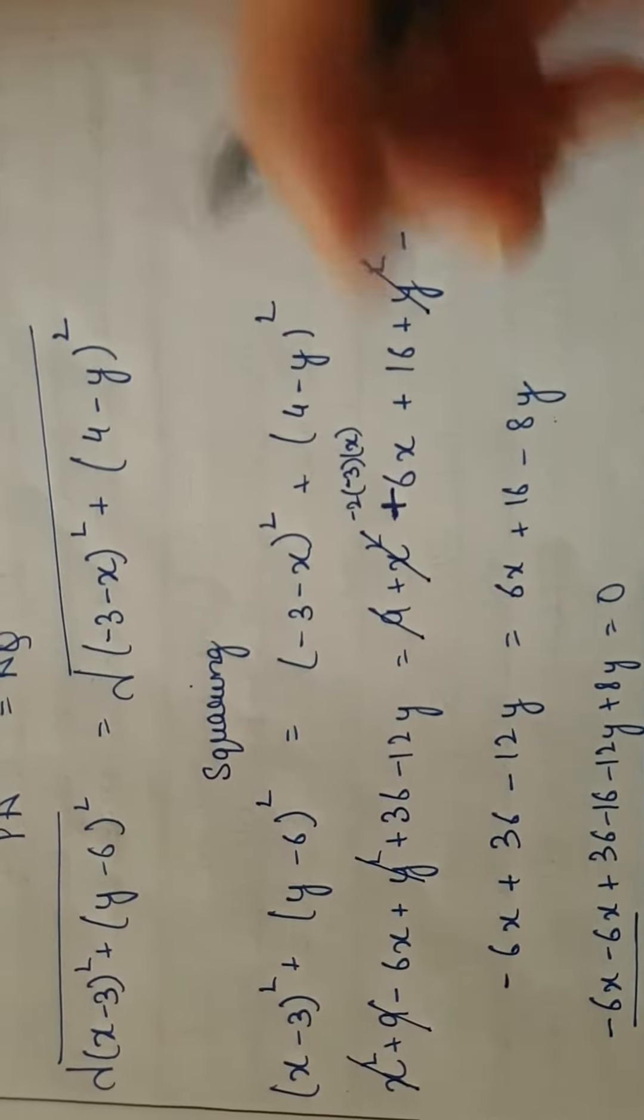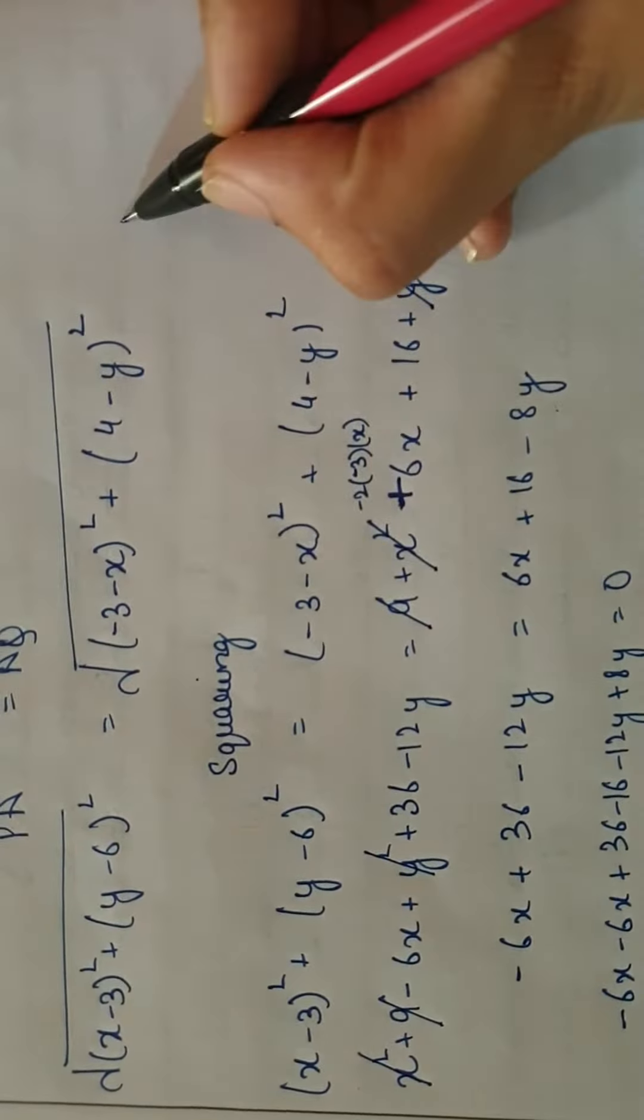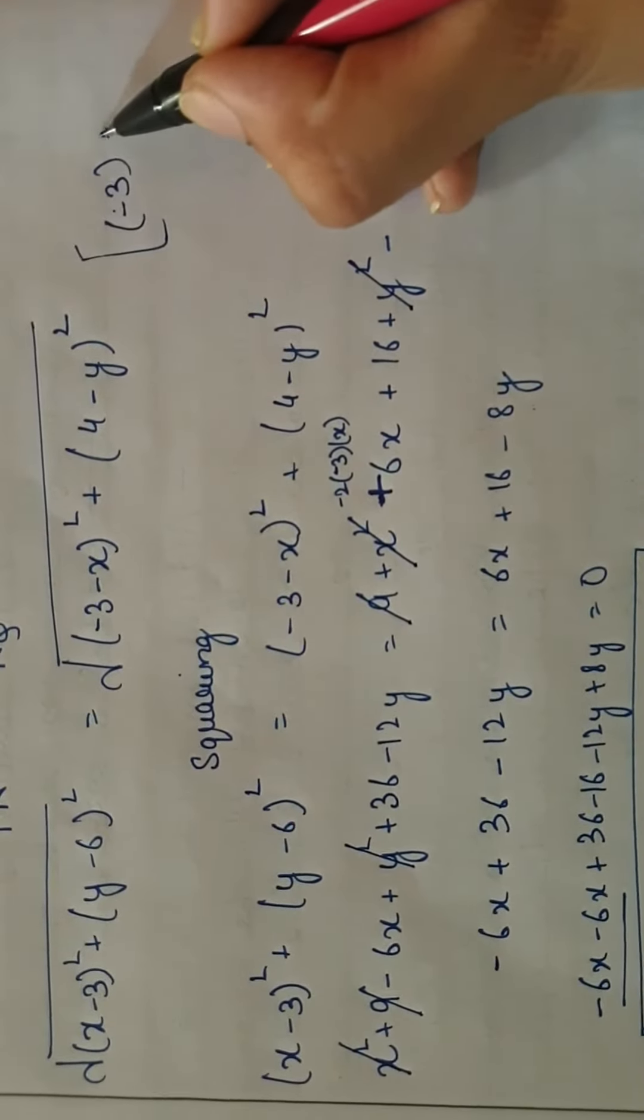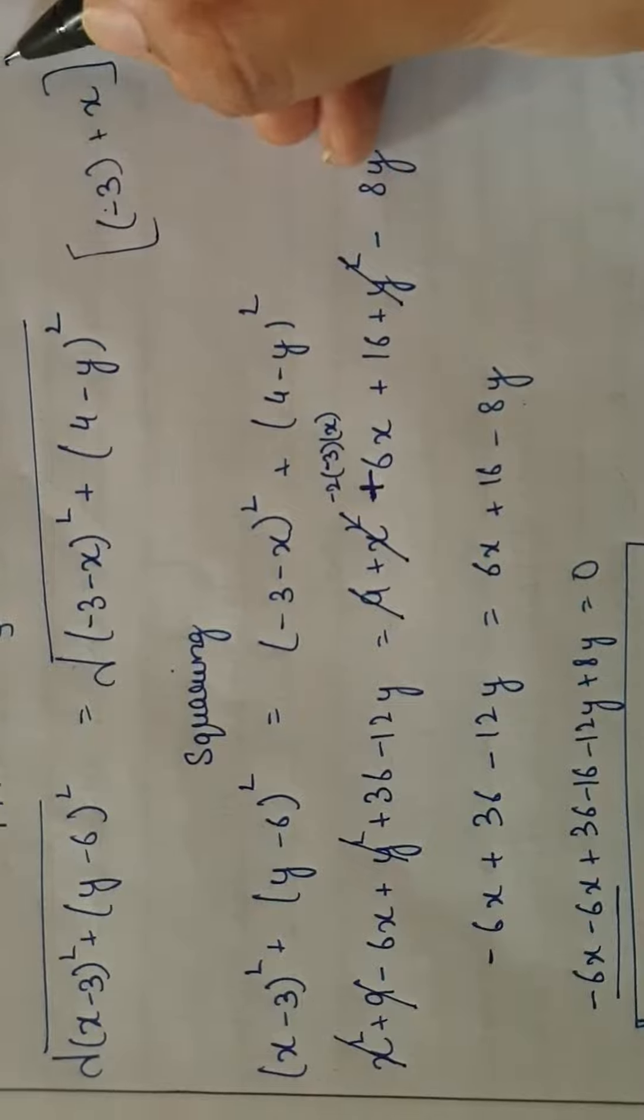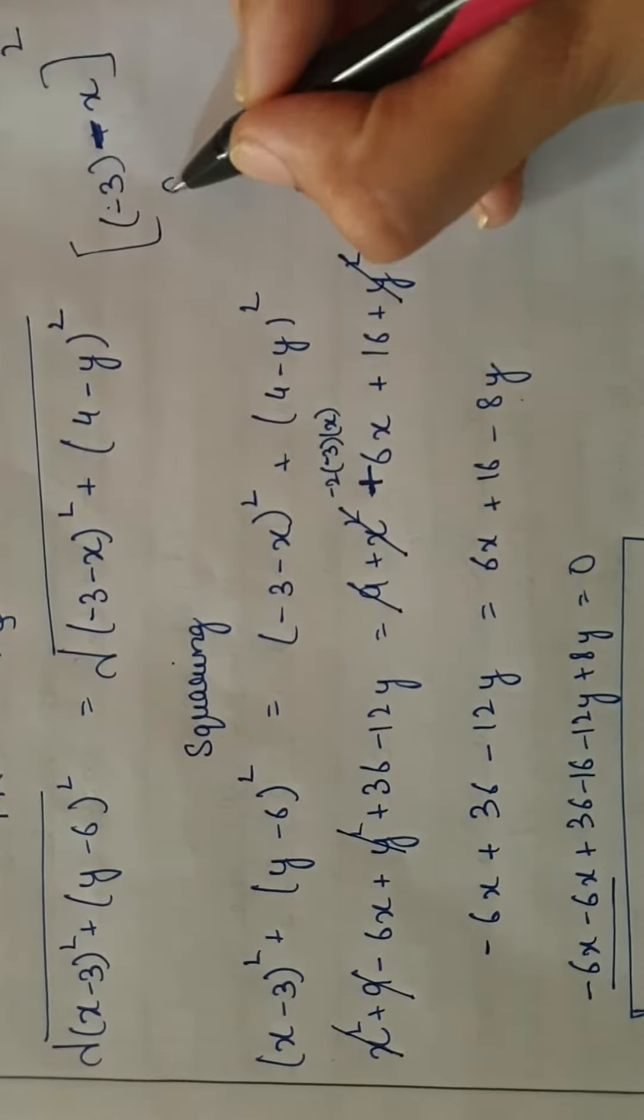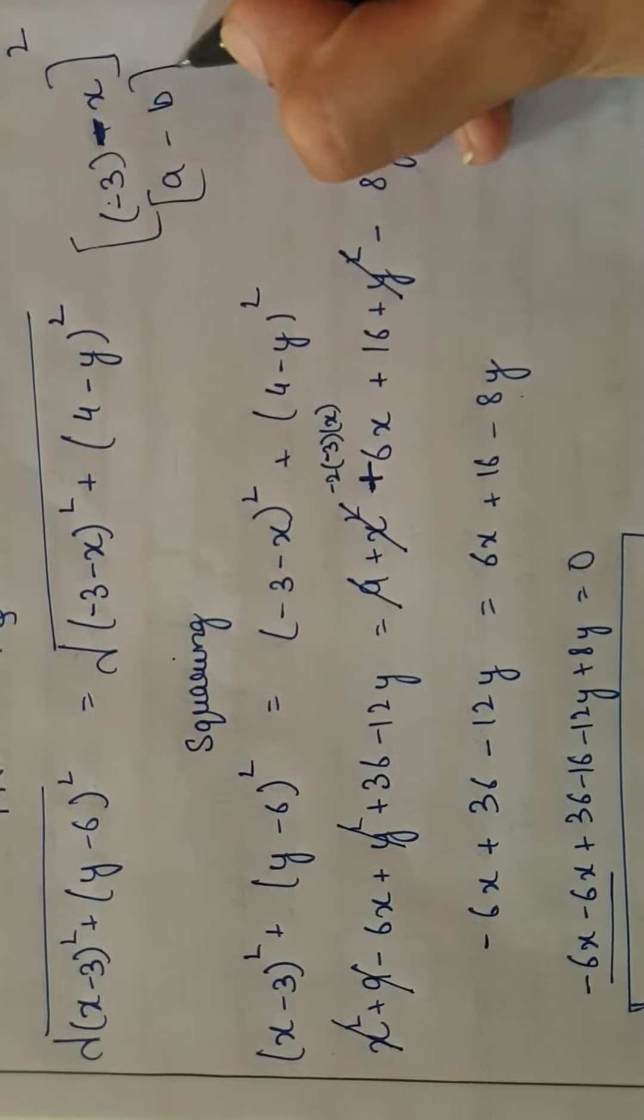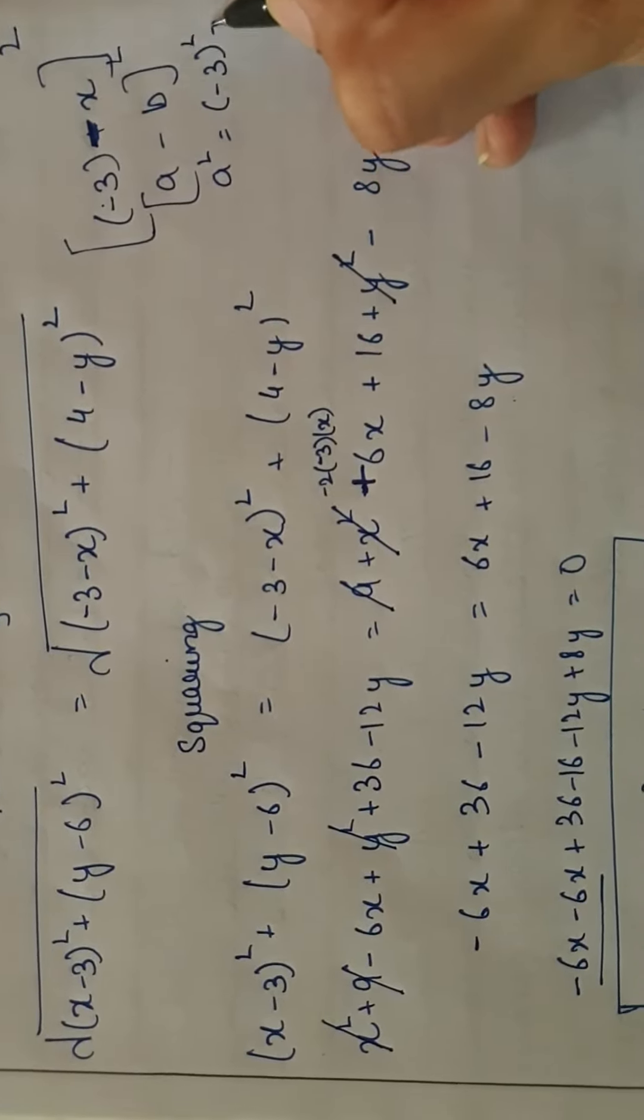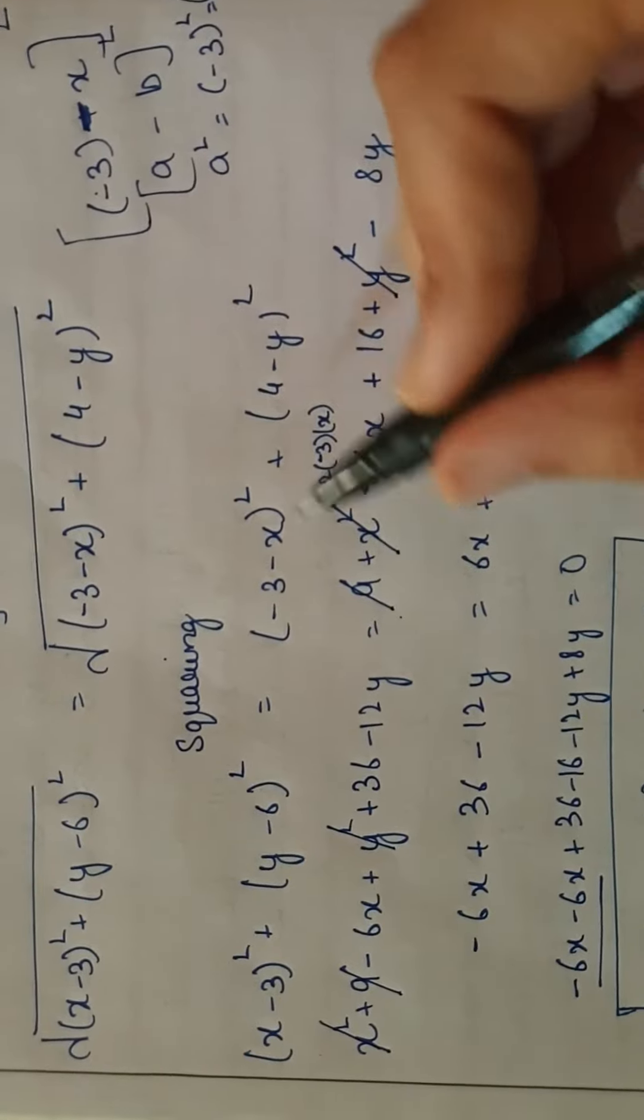Here we have (-3-x), where we take a value as -3 and b value as x. This is (a-b)². So a² is (-3)² which is 9.